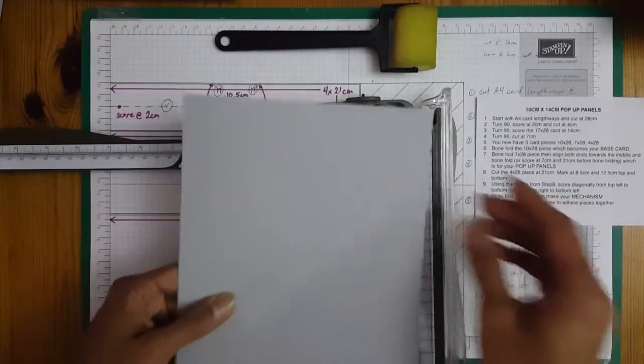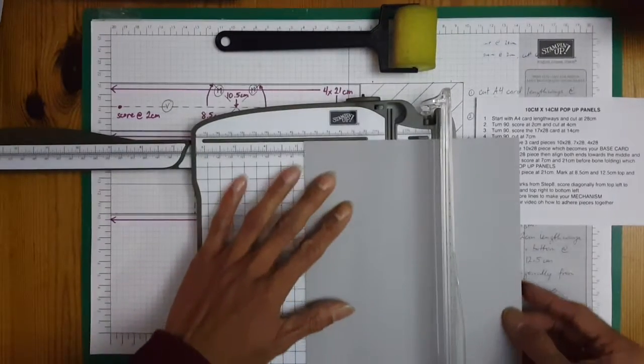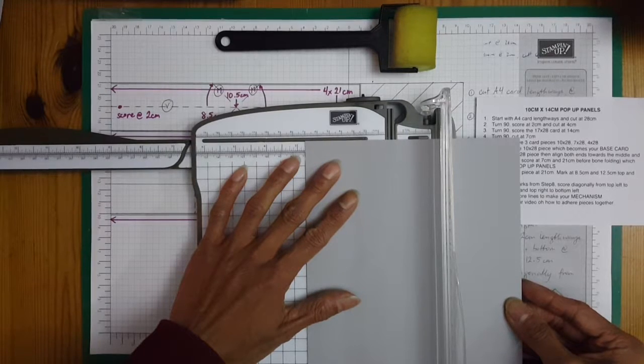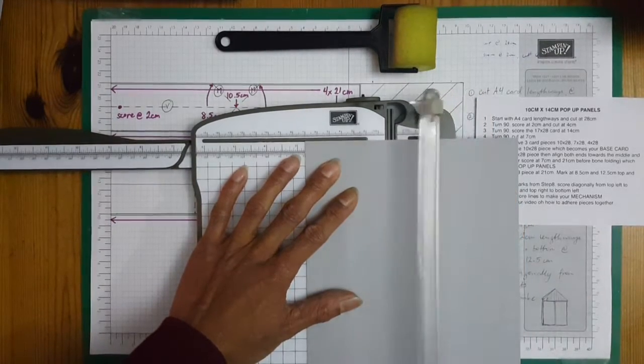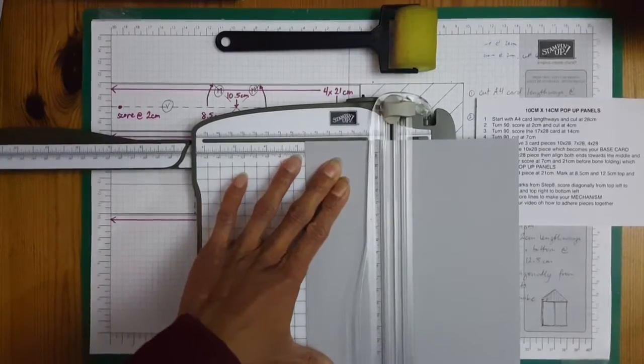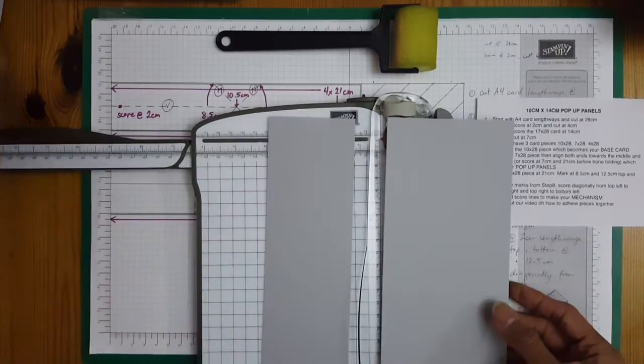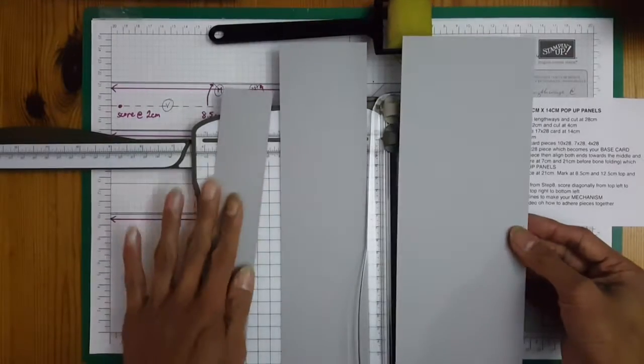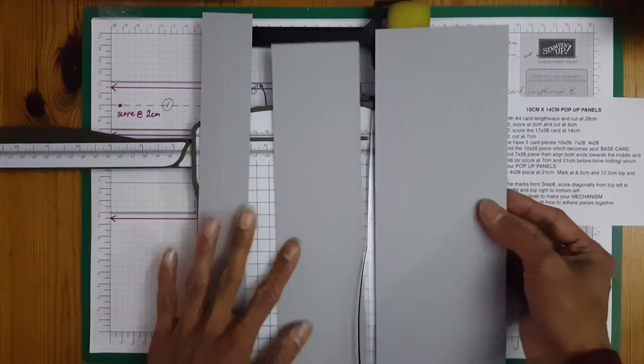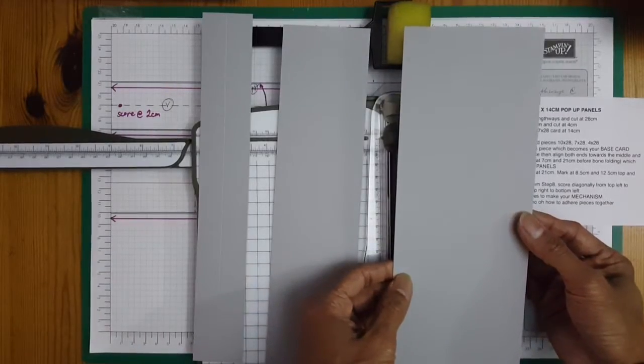Turn 90 degrees, turn 90 and cut at 7. So now we are left with three card sizes. This one would be for your base card.